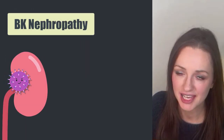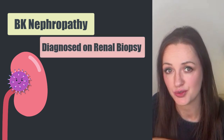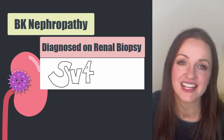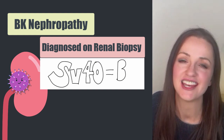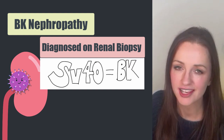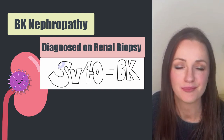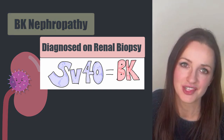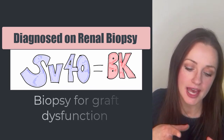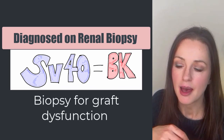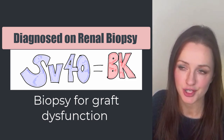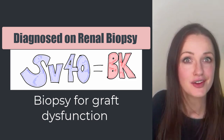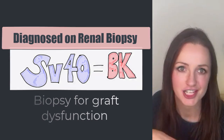In terms of diagnosing BK nephropathy, the gold standard is kidney biopsy. The key biopsy buzzword is SV40 staining — if you see SV40 staining on a kidney biopsy, it essentially confirms BK nephropathy. We don't biopsy everyone; if we catch it at the viremia level, we manage it there. But we would biopsy patients with graft dysfunction — when kidney function deteriorates, a biopsy will diagnose BK nephropathy and also delineate other causes of allograft dysfunction such as rejection.